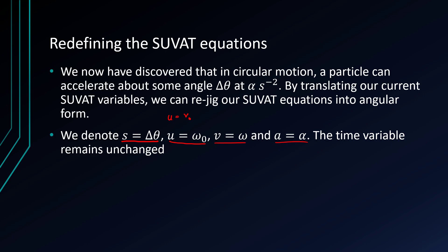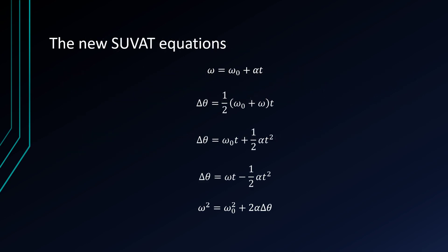So what does that actually do to our SUVAT equation? Well, this is what they turn into. So the first one stems from V equals U plus A T and becomes omega equals omega nought plus alpha T.